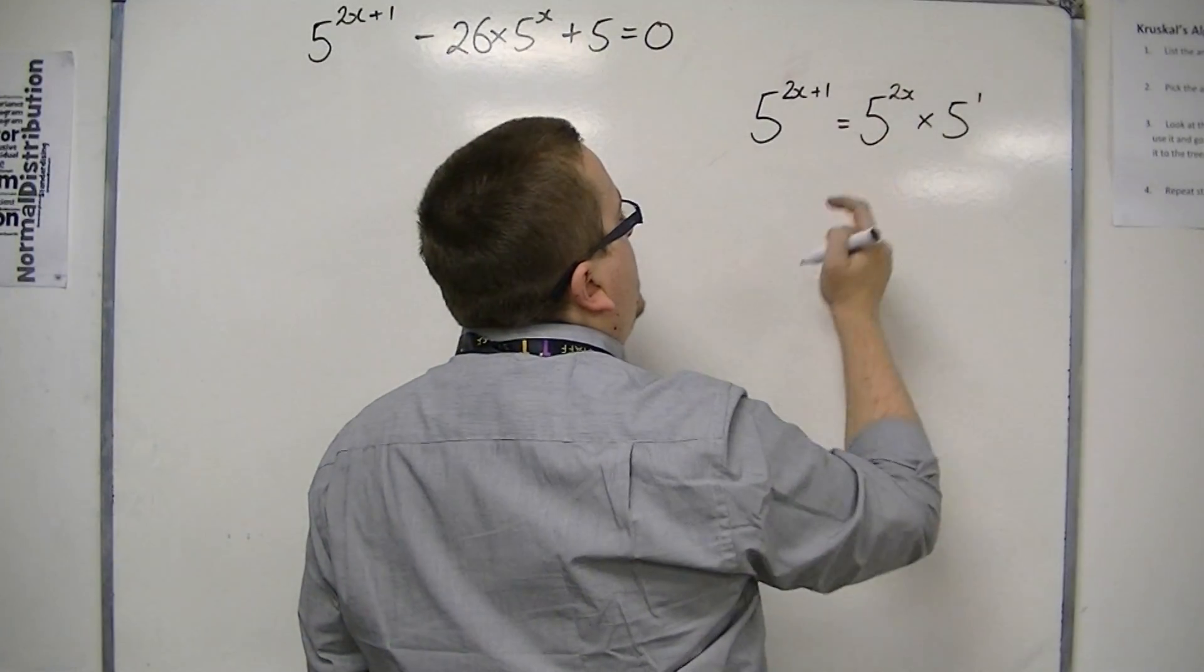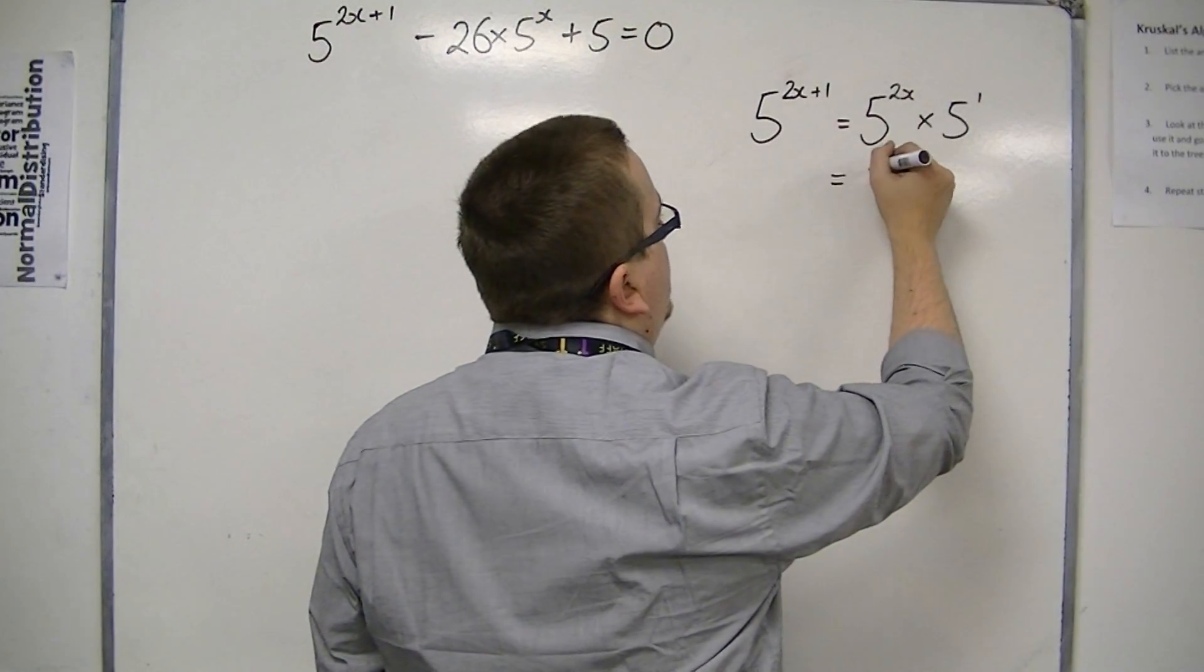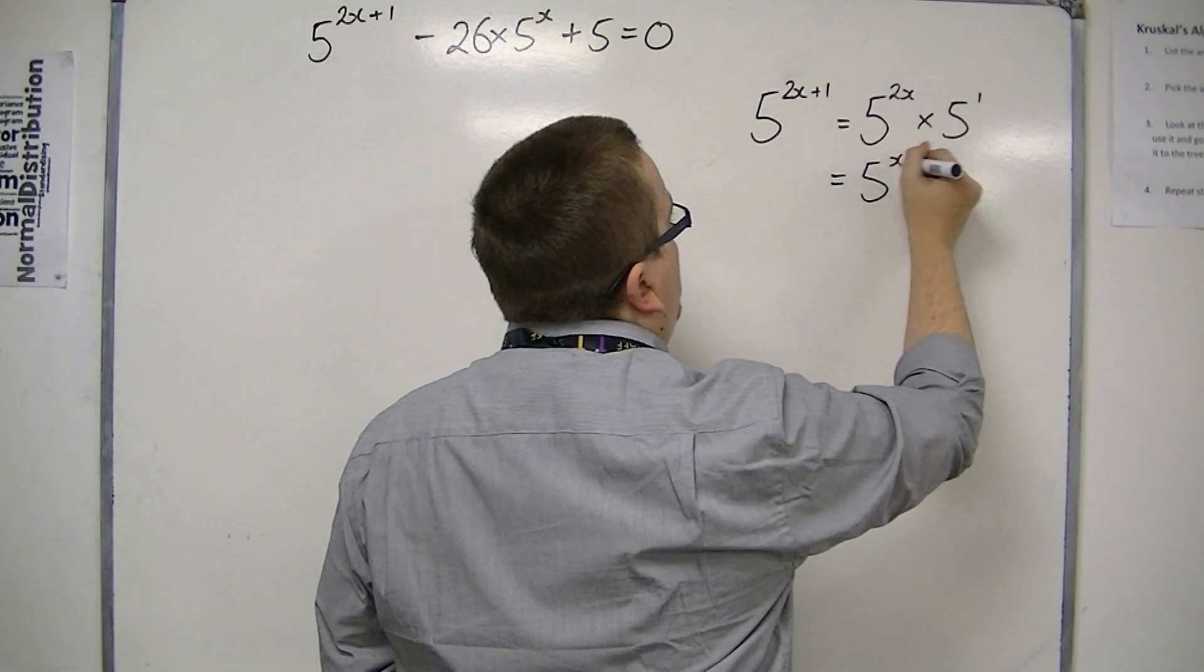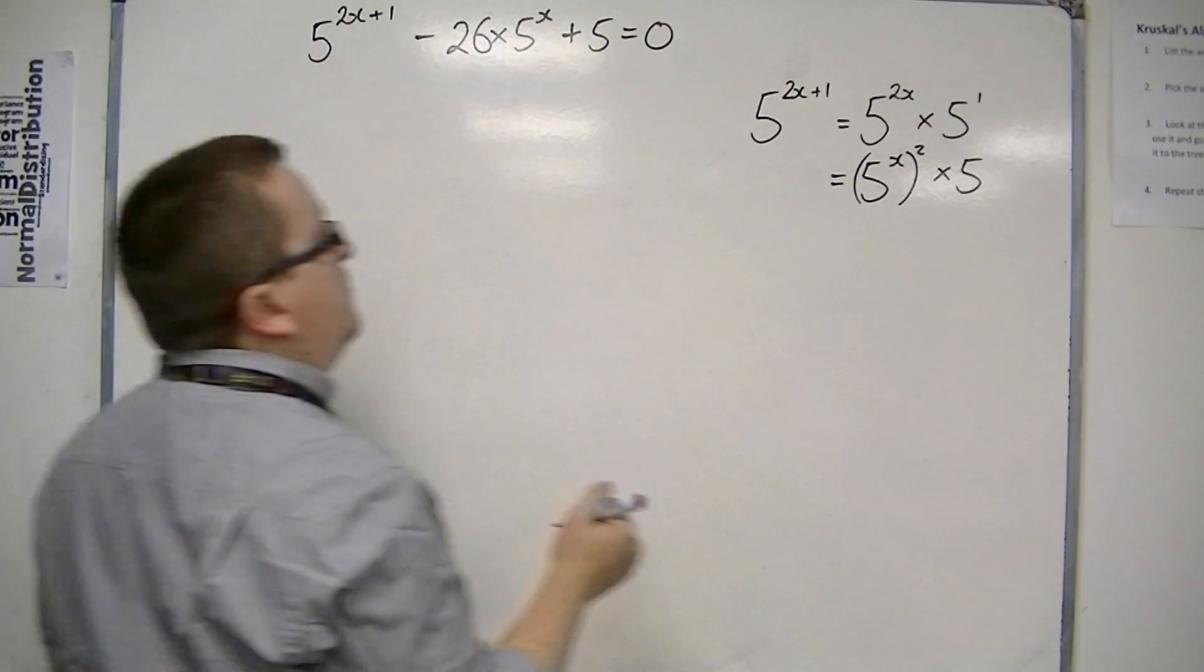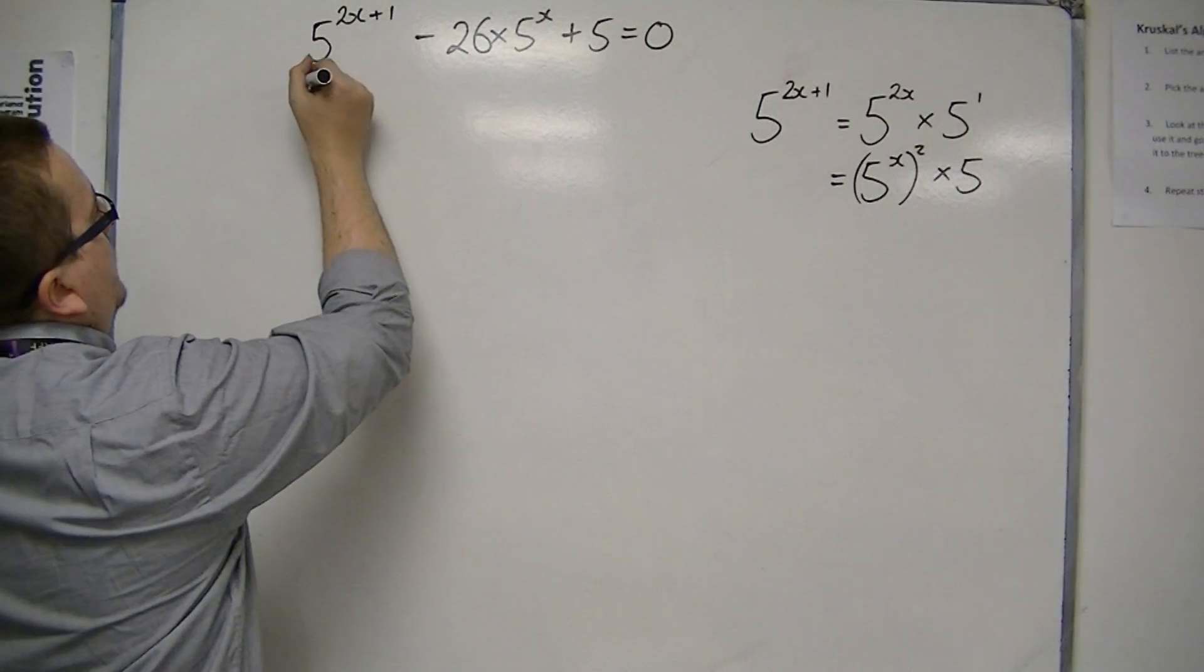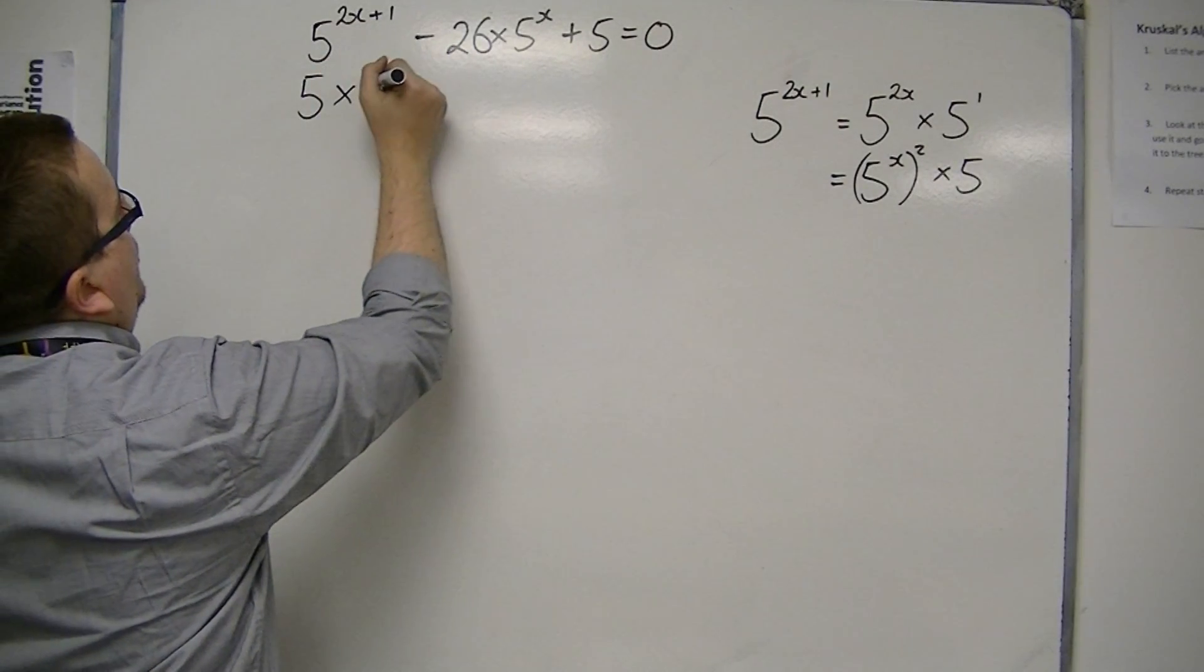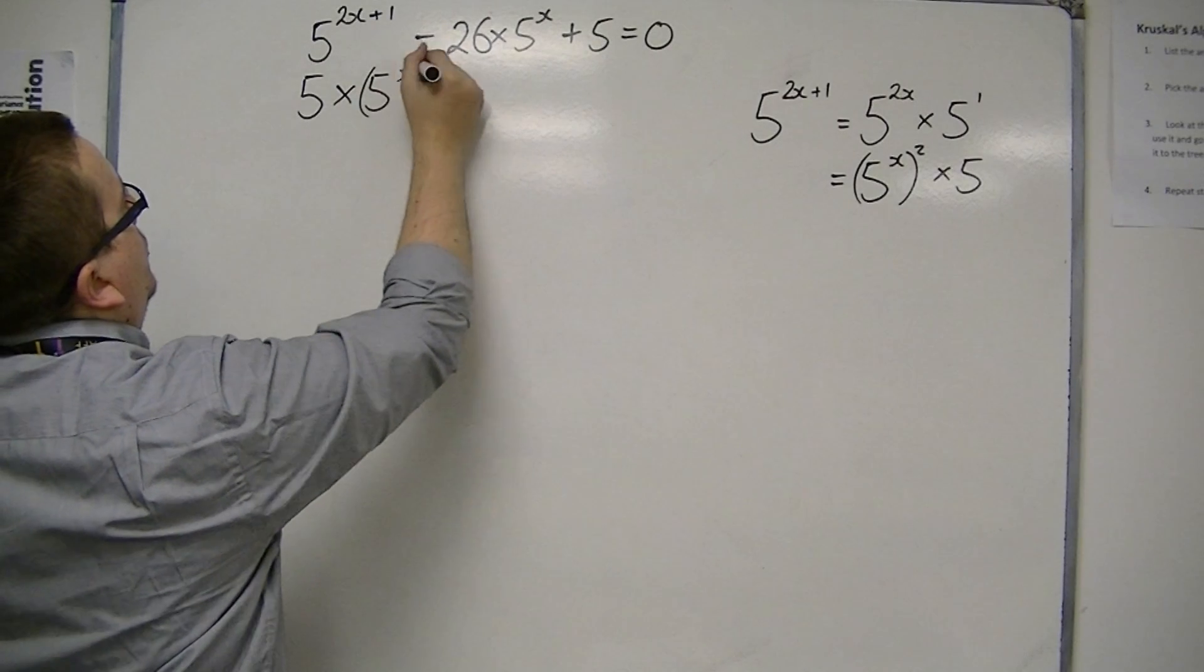And then, because I know that 5 to the 2x is 5 to the x squared, this is the same as 5 to the x all squared times 5. And if I just reorder that, then I've got 5 times 5 to the x squared.